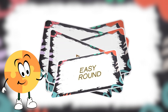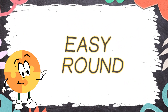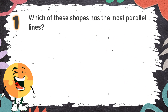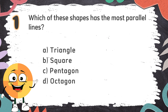Easy Round. Number 1: Which of these shapes has the most parallel lines? The choices are: A. Triangle, B. Square, C. Pentagon, D. Octagon.